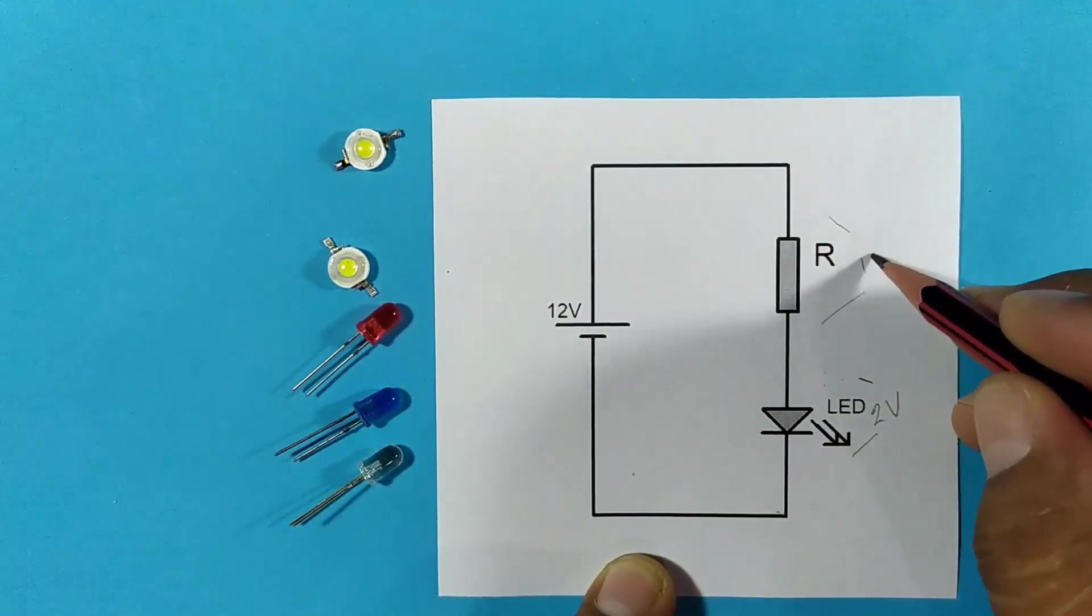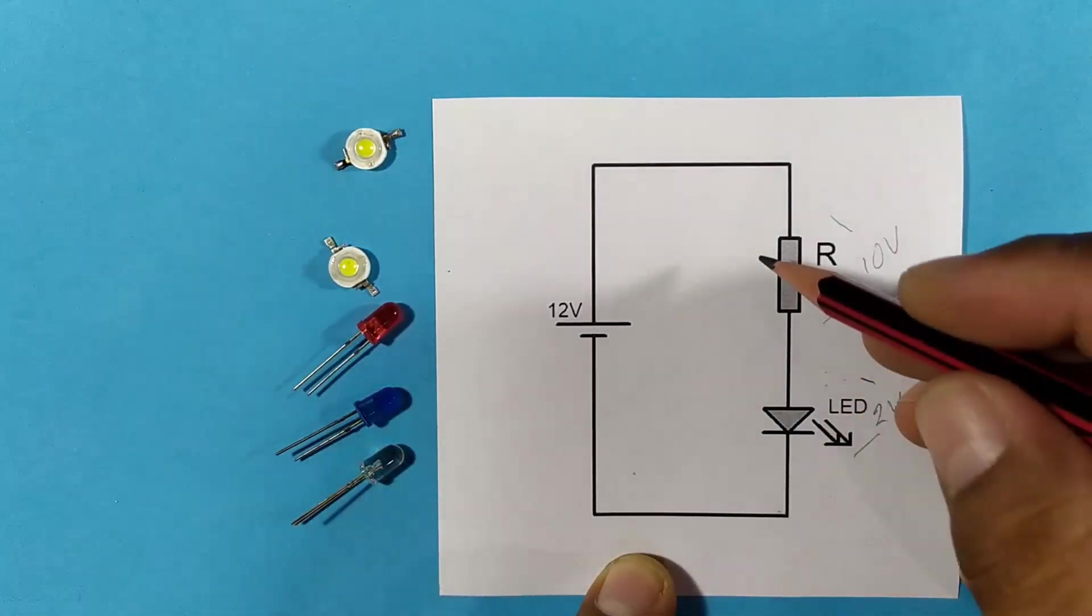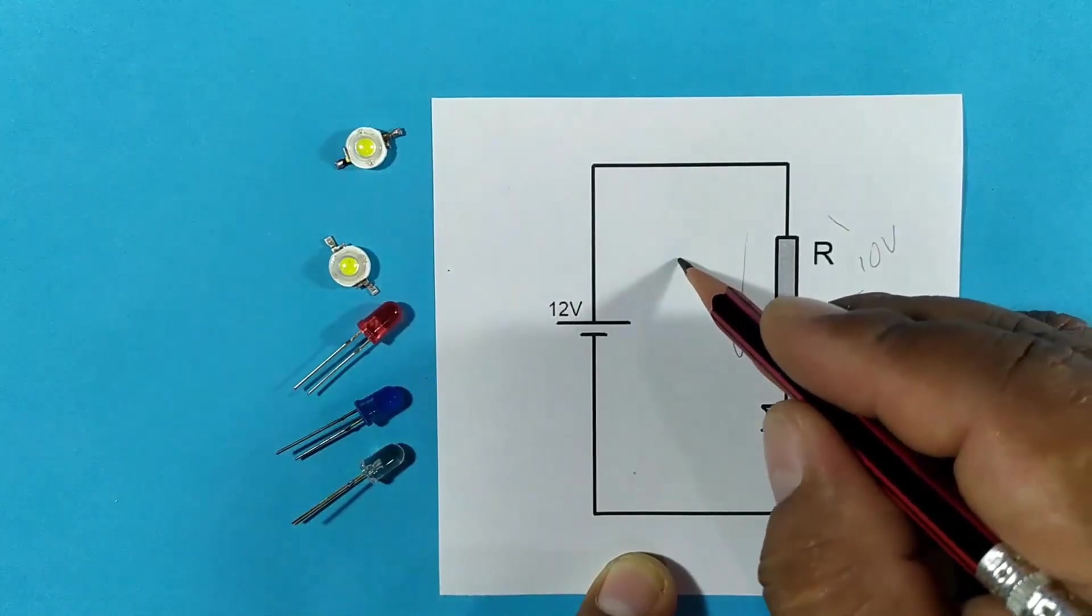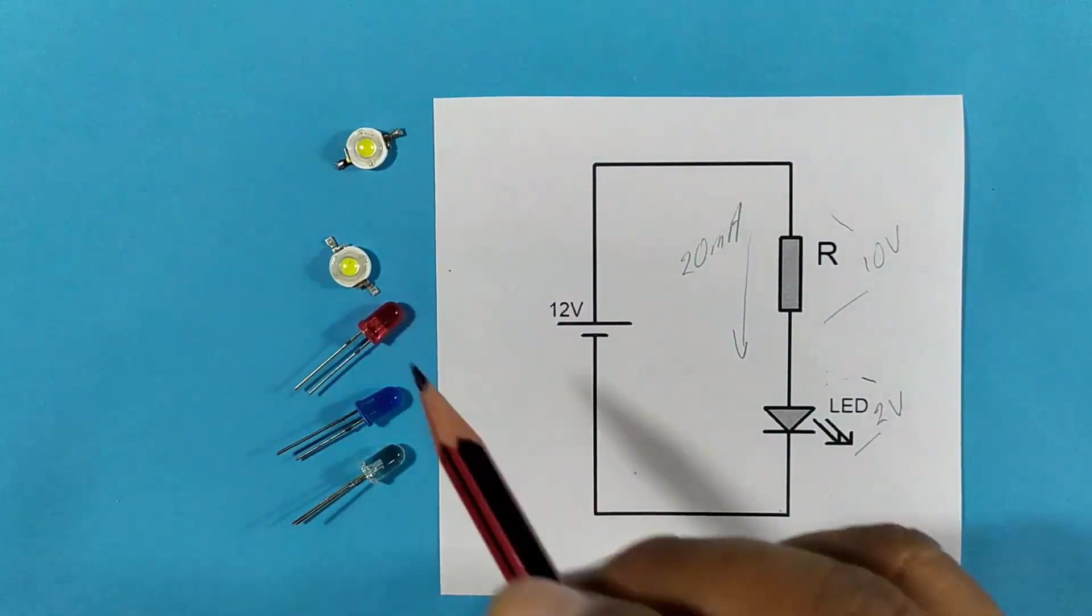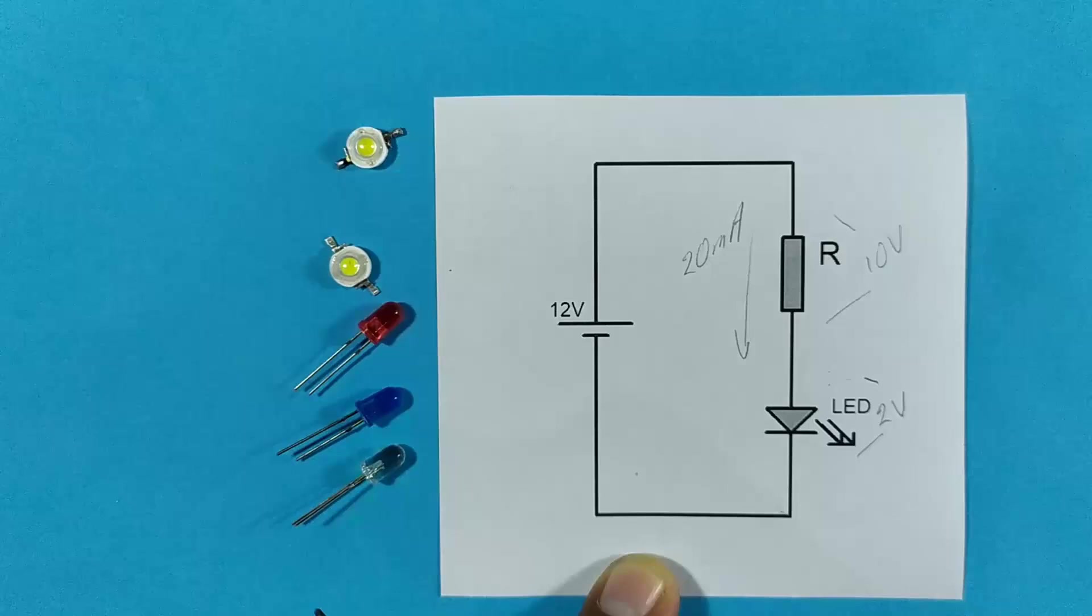Which in this case would be 10 volts. The idea here is that a current or intensity passes through it. How much? Well, 20 milliamps in the case of common LEDs. In the case of the other LED, the one at 3 volts, then we will see how much current it needs to work.